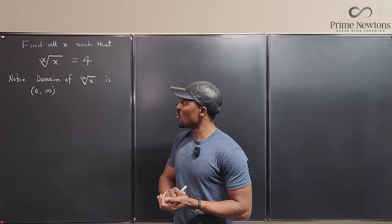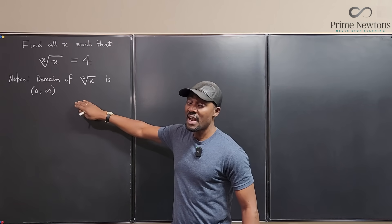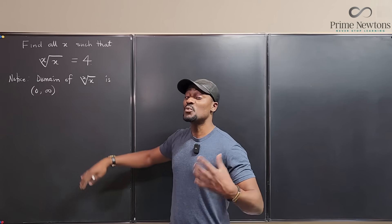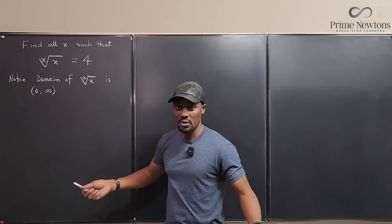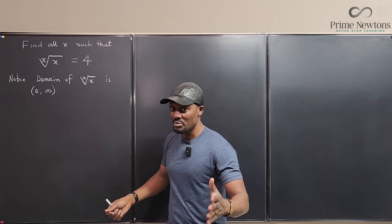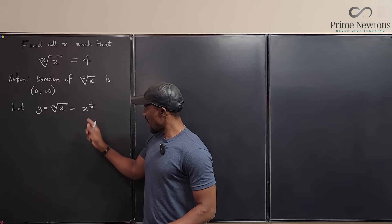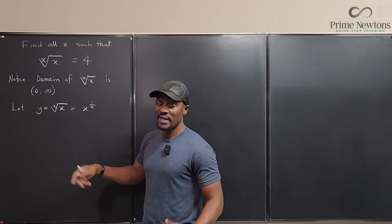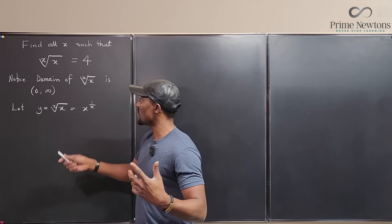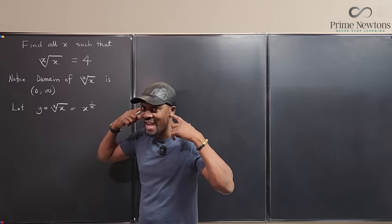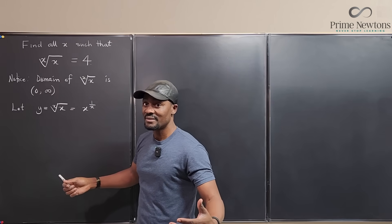Here is what I'm going to do: I am going to find the critical numbers for this function and see if it has a maximum or minimum. Because what I'm thinking is, it is not possible for the value of this function to be equal to 4, as far as real numbers are concerned. So let's do it. I'll take the natural log of both sides so I can do my differentiation. What I'm looking for is the maximum value of this function, because in my head I'm thinking 4 is too big.